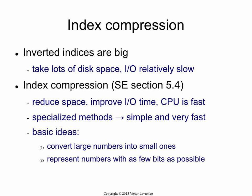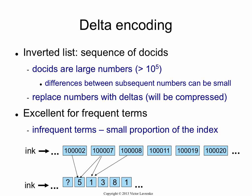There are two basic ideas in compressing inverted lists. Our inverted lists typically consist of lots of numbers, and these are big numbers. So we'll take those big numbers and make them smaller, and then once we have smaller numbers, we'll try to pack them into a smaller number of bits. Those are the two basic ideas.